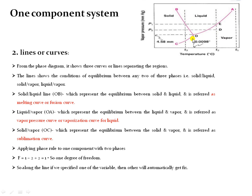Any point on a line represents equilibrium between two phases. If it is line OC, it represents equilibrium between solid and vapor. If it is line OA, it represents equilibrium of liquid and vapor. If it is line OB, it represents equilibrium between solid and liquid.